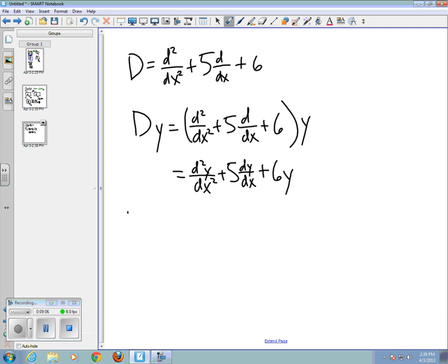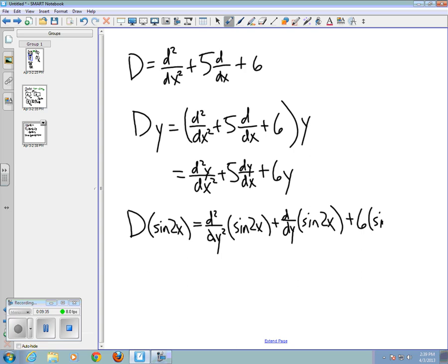So, for instance, if I wanted to do D of, say, sin(2x), that would be the second derivative of sin(2x) plus 5 times the first derivative of sin(2x) plus 6 times sin(2x).